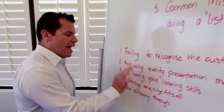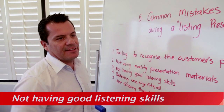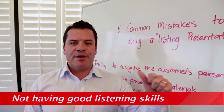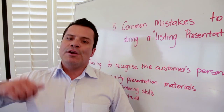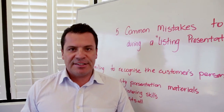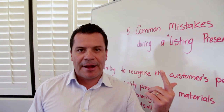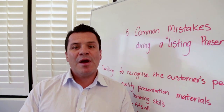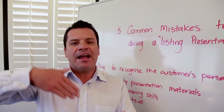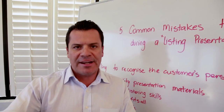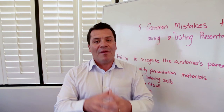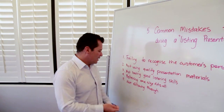Number three: not having good listening skills. There are two types of listening skills. Either you're using a passive listening skill or an active listening skill. Passive listening is in one ear and out the other. When you're an active listener, you reaffirm everything the client says so they know you understand their needs. It's quite simple.